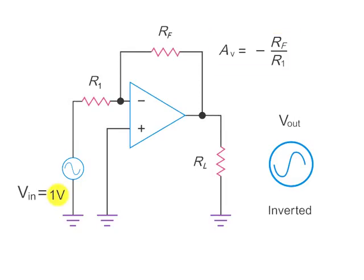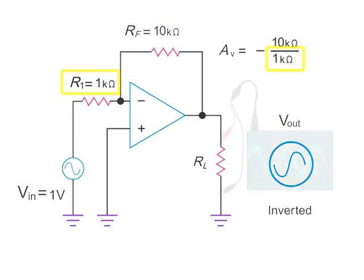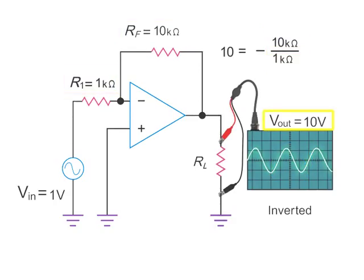Therefore, an input of 1 volt with a feedback resistor value RF of 10 kiloohms divided by an R1 value of 1 kiloohms will yield a 10 volt output signal that is exactly inverted from the original input wave.